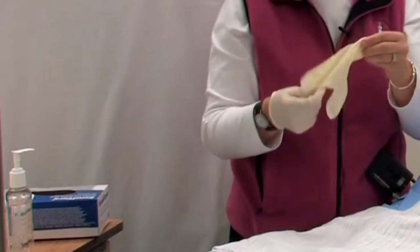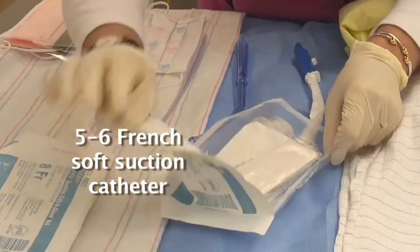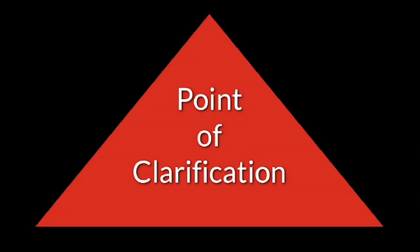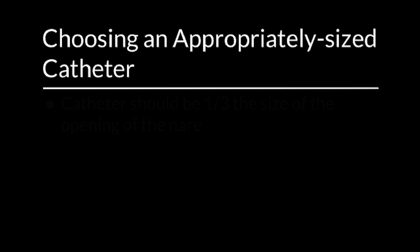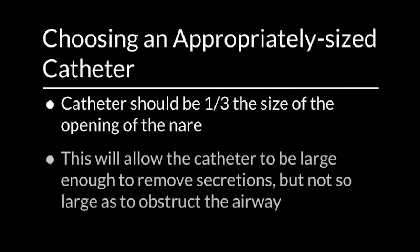I am going to use a size 5 or 6 soft suction catheter to suction this baby. You might use a larger catheter such as an 8, 10, or 12 depending on the size of your patient. It is important to select the appropriately sized catheter based on the size of the patient's nares — the catheter should be one third the size of the opening of the nares. This will allow the catheter to be large enough to remove secretions but not so large as to obstruct the airway.